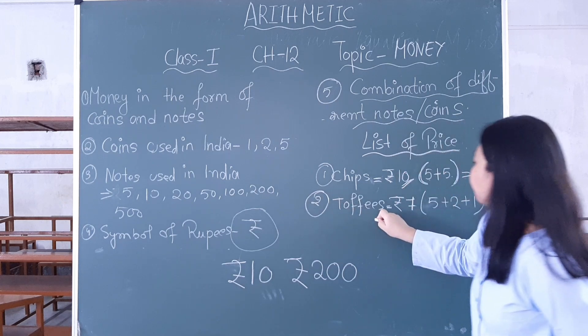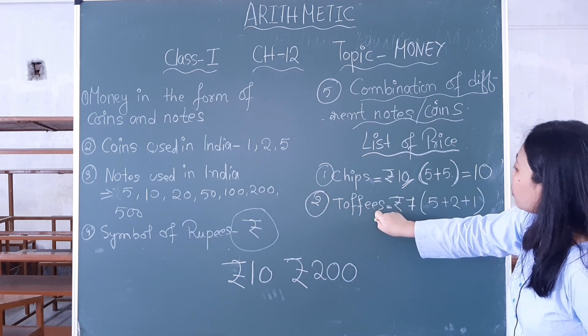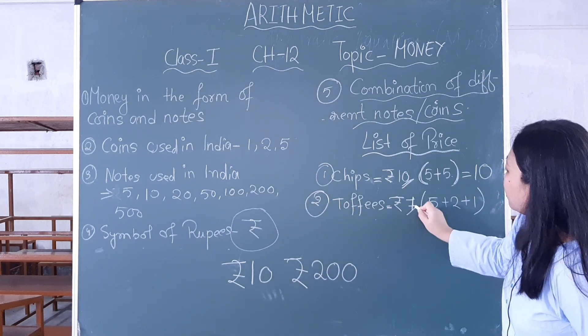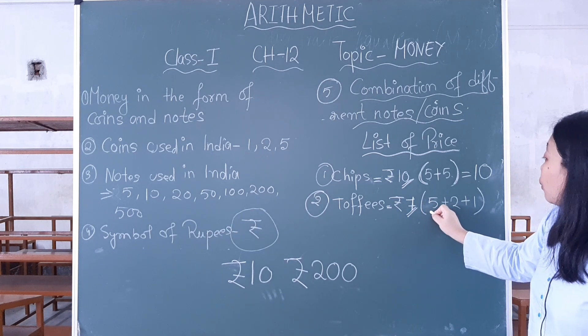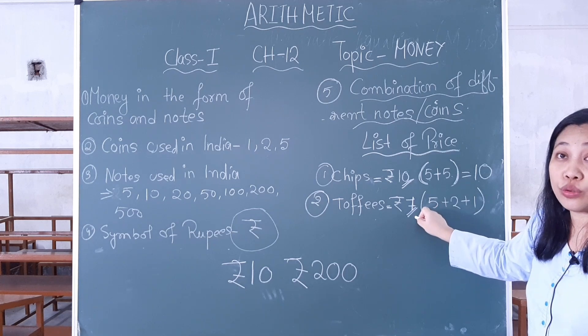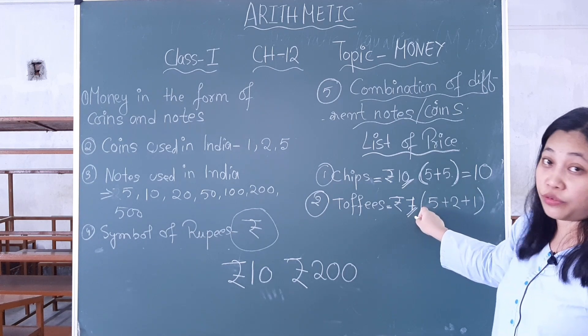Second example: Toffee. How much does the toffee cost? 7 rupees. Now you can break it down if you don't have a 7 rupee note. In Indian currency, we don't have 7 rupee notes.